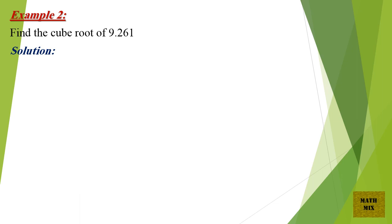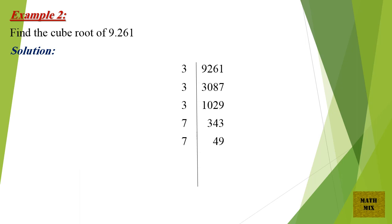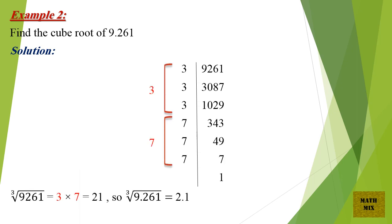Example 2: Find the cube root of 9.261. Solution: The cube root of 9.261 equals 3 times 7, which equals 21, so the cube root of 9.261 equals 2.1.